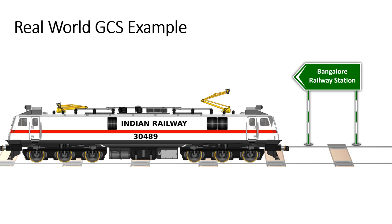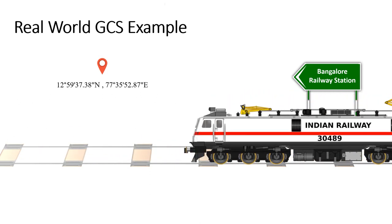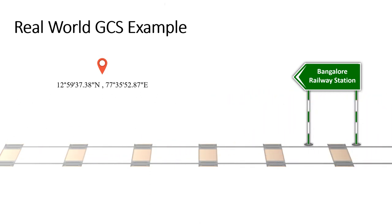To represent a location in Geographic coordinate system, you need the location in either degree minute seconds or decimal degrees. Let us find out the location of the Bangalore railway station. Consider the location of the railway station to be 12 degree, 59 minute, 37.38 second north, 77 degree, 35 minute, 52.87 second east in Geographic coordinate system.